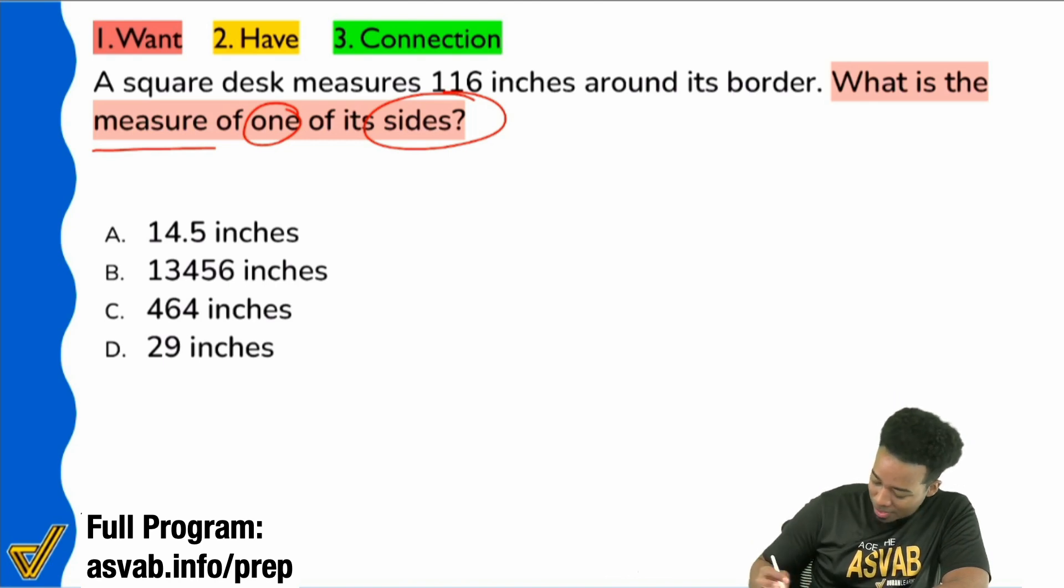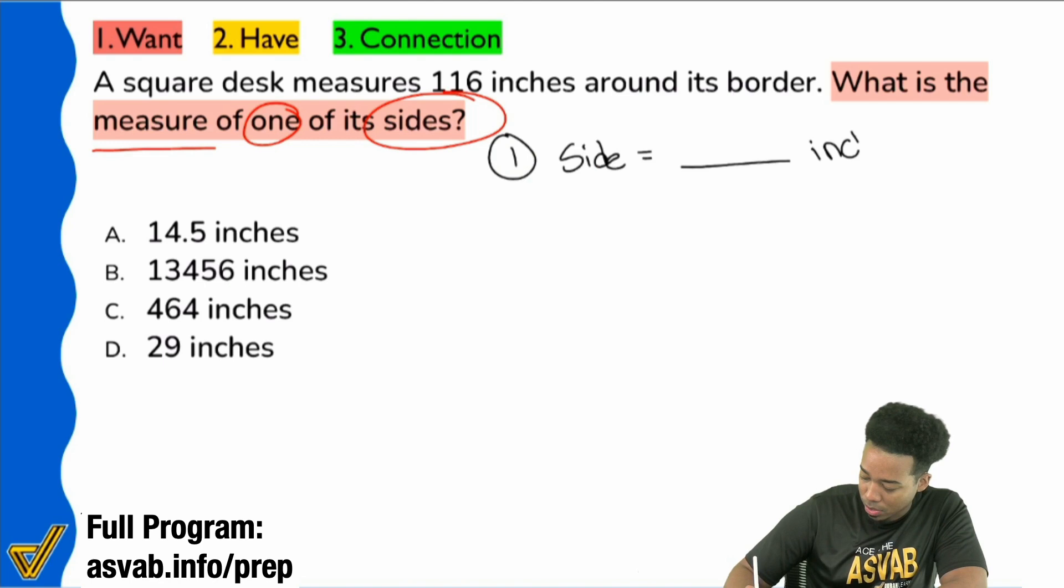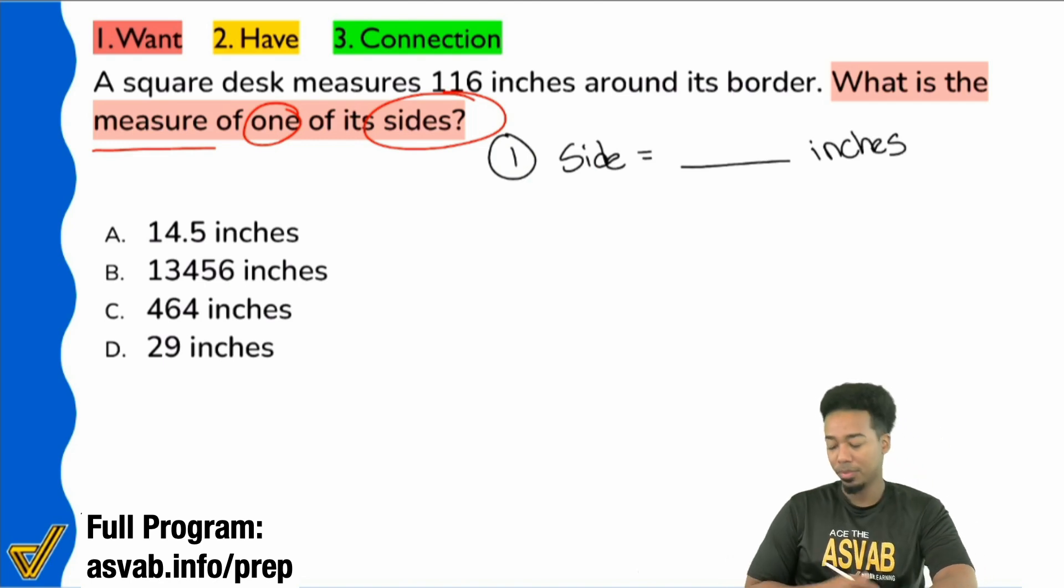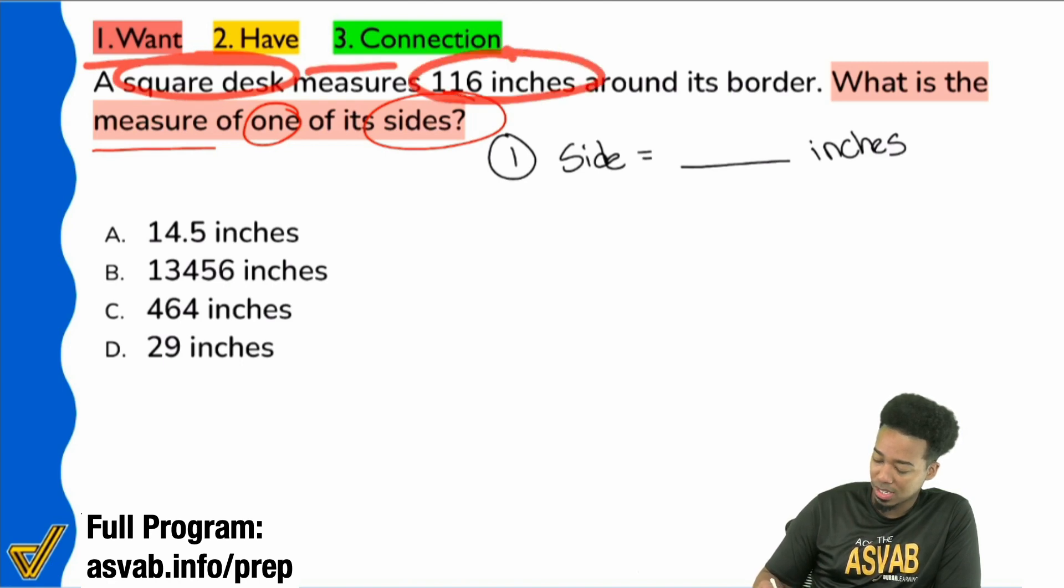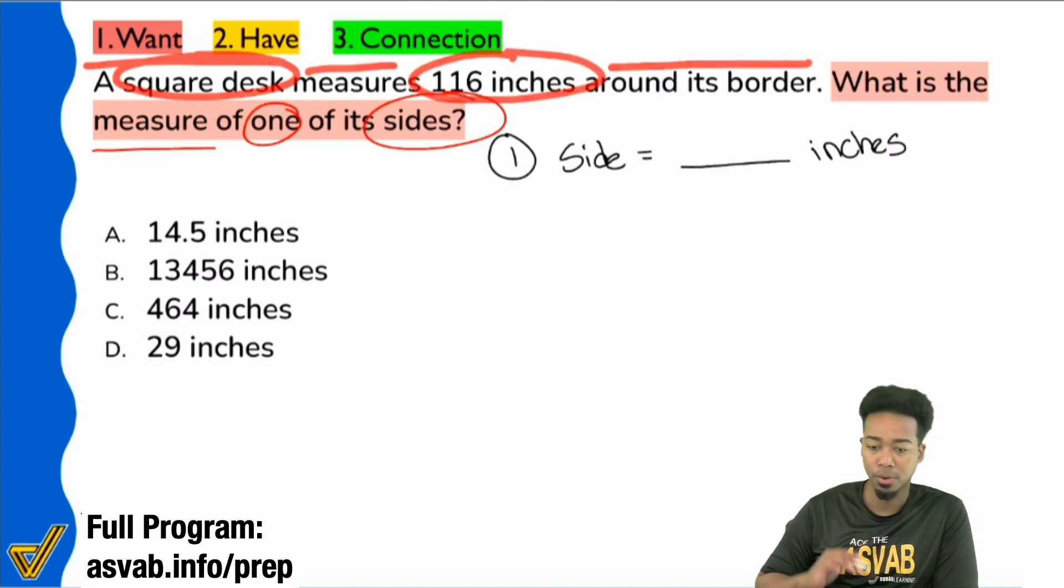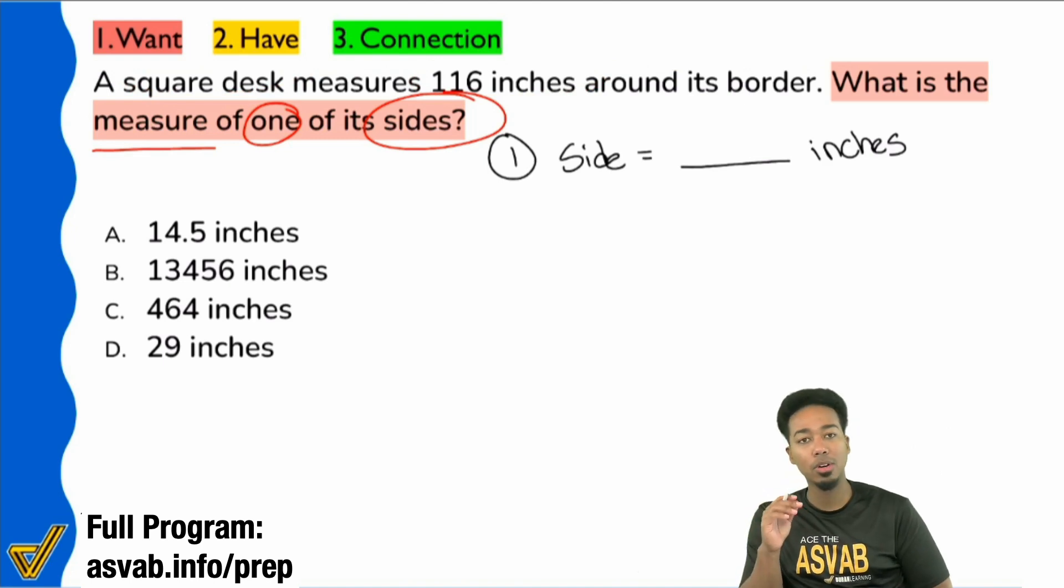So here, we want to find one of the sides of the measure of one of the sides. So I'm going to say that the side equals blank. And it says inches for the answer choices, so I'll go ahead and do inches. Now, up next, let's go ahead and look through all of the information that the problem may give us. So right over here, I'm going to say, hey, a square desk measures 116 inches around its border. Now, let me let that fade away and let me go ahead and go back first.